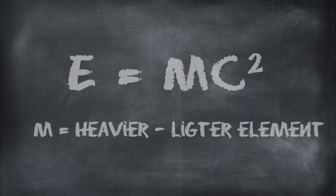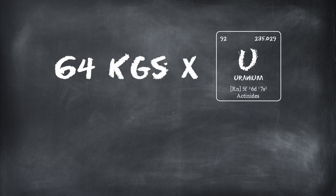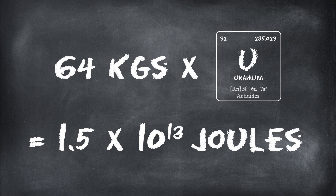Using this formula, we can calculate that 64 kilograms of highly enriched U-235 released 1.5 × 10¹³ joules of energy during the Hiroshima blast.